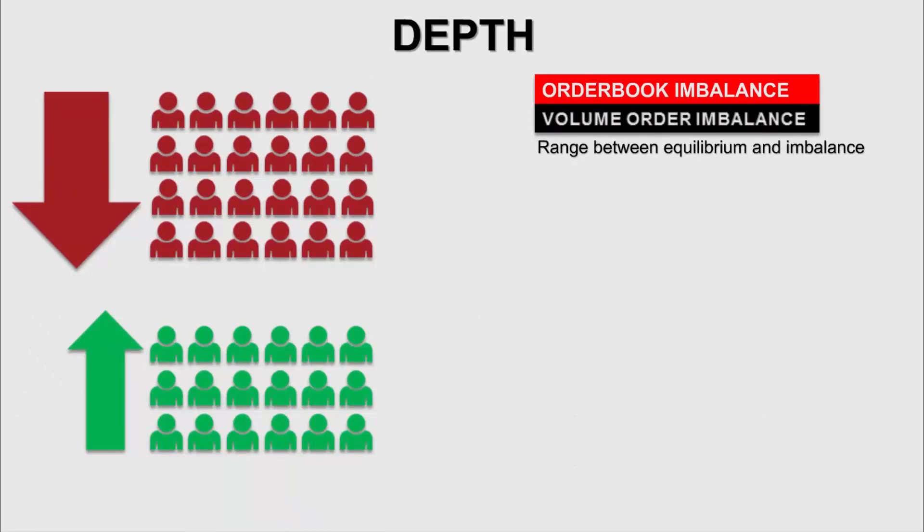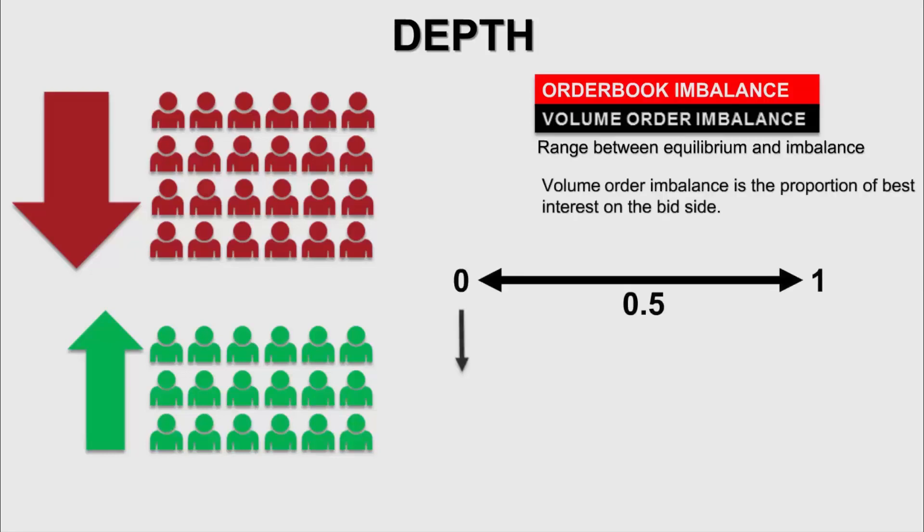The volume order imbalance is the theoretical way of calculating the order book. If you search up some literature on order book imbalance, you will find that they refer to volume order imbalance. This is also something new in version 2. It is defined as the proportion of interest on the bid side.